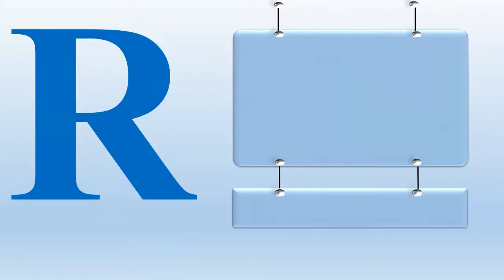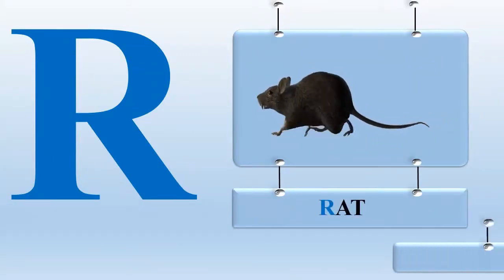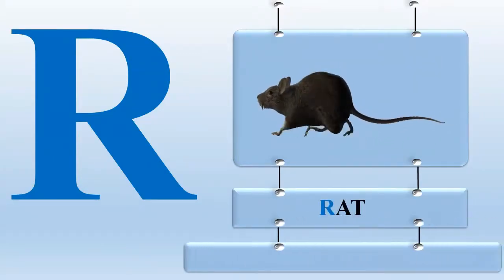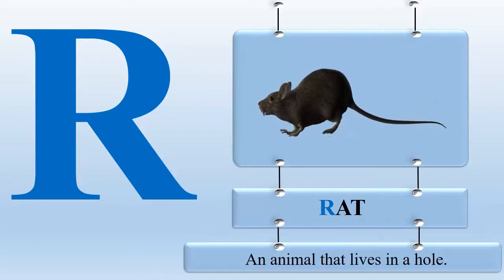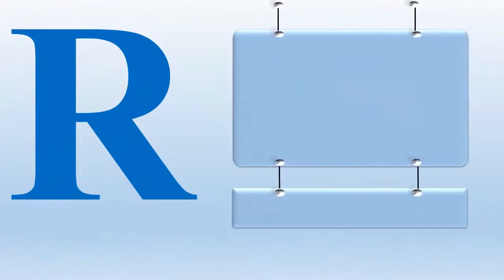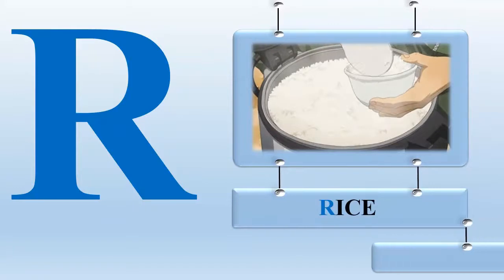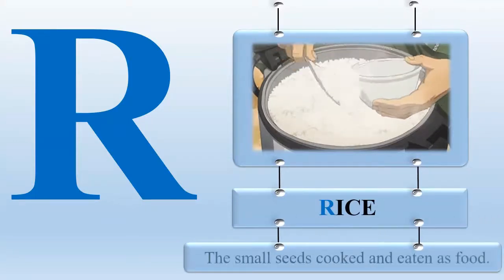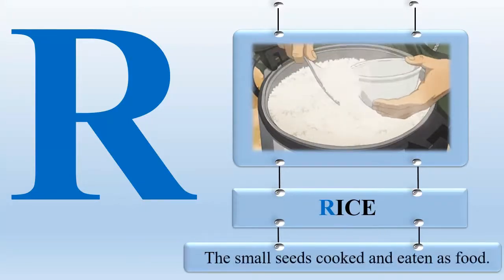R for rat — an animal that lives in a hole. R for rice — the small seeds cooked and eaten as food.